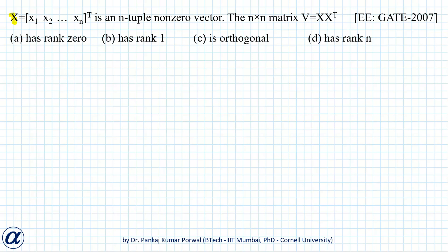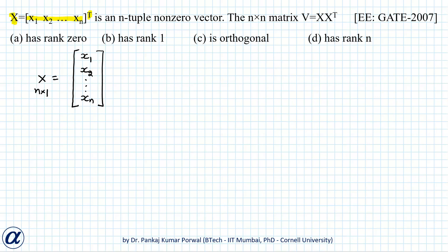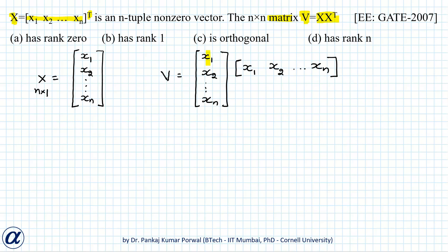In this question, I am given a vector capital X as a row vector then transposed, so capital X is a column vector consisting of x1, x2, ... xn, and the size of capital X is n by 1. If we define a matrix capital V as X times X transpose, then V will be a column vector (n by 1) multiplied by a row vector (1 by n), resulting in a matrix of size n by n.